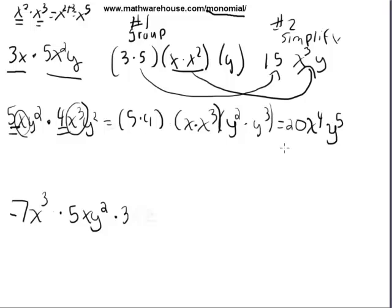So group them, then simplify. Then let's try a little harder one. Negative 7x cubed times 5xy squared times 3. Let's make this x to the 4th, y to the 3rd, k.